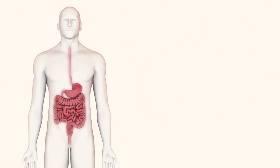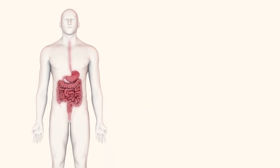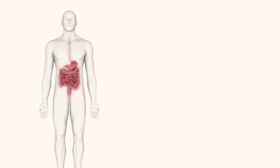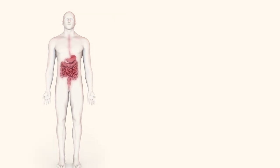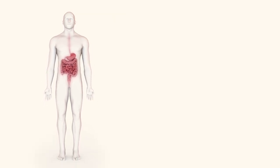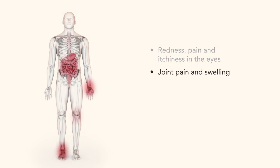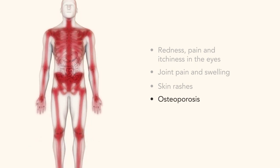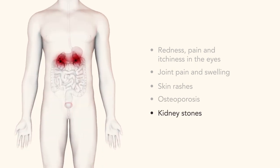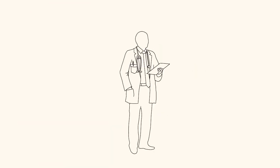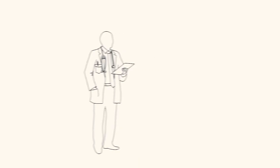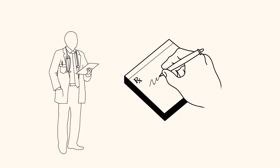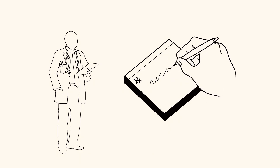For reasons that are not entirely understood, some people develop symptoms that are related to the disease but affect other parts of the body, including redness, pain and itchiness in the eyes, joint pain and swelling, skin rashes, osteoporosis in the bones, and kidney stones. If you ever experience any of these symptoms, let your doctor know immediately.